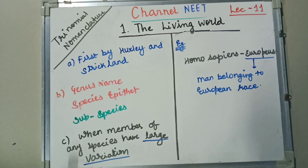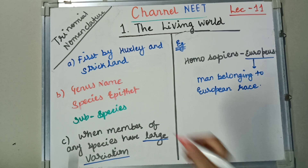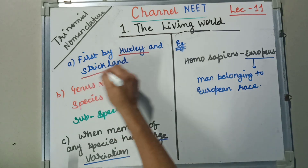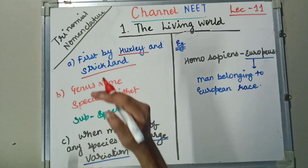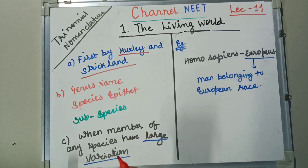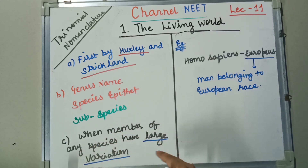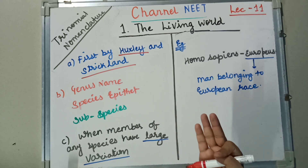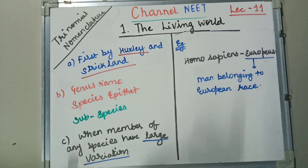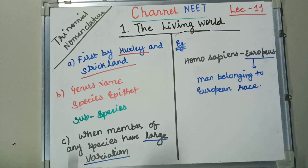To quickly revise: Trinomial Nomenclature was given by Huxley and Strickland. It consists of genus name, species name, and subspecies name. It is used when members of any species have large variation, as seen in Cauliflower, Cabbage, and Wild Cabbage, and also in Homo sapiens sapiens and Homo sapiens europaeus — all classified under Trinomial Nomenclature.